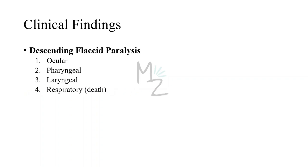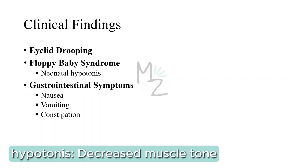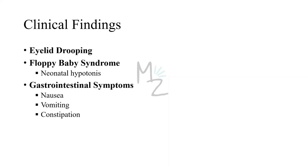Clostridium botulinum causes a descending flaccid paralysis — a descending weakness affecting the ocular, pharyngeal, laryngeal, and respiratory regions, which can lead to death. There is no fever present. Other symptoms include eyelid drooping, floppy baby syndrome, and neonatal hypotonia. In infant botulism, inhibition of neuromuscular activity causes floppy baby syndrome — the baby cannot voluntarily move its muscles. Gastrointestinal symptoms include nausea, vomiting, and constipation due to impaired smooth muscle contraction in the intestine.